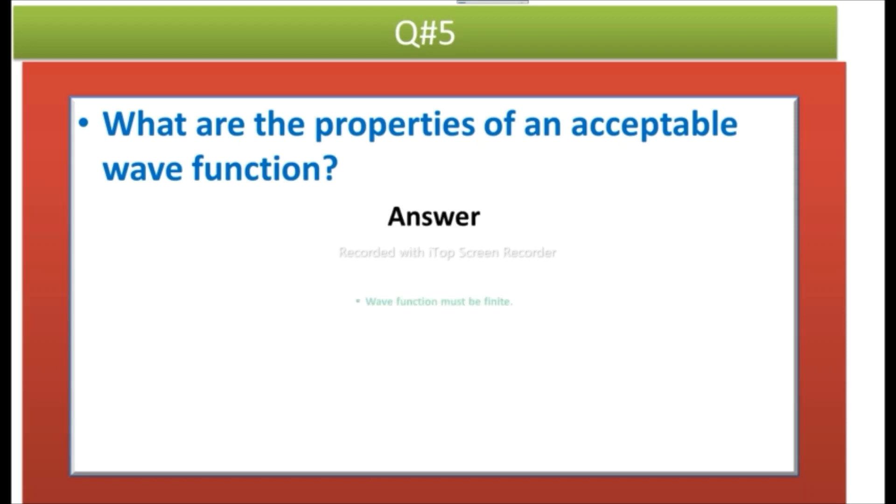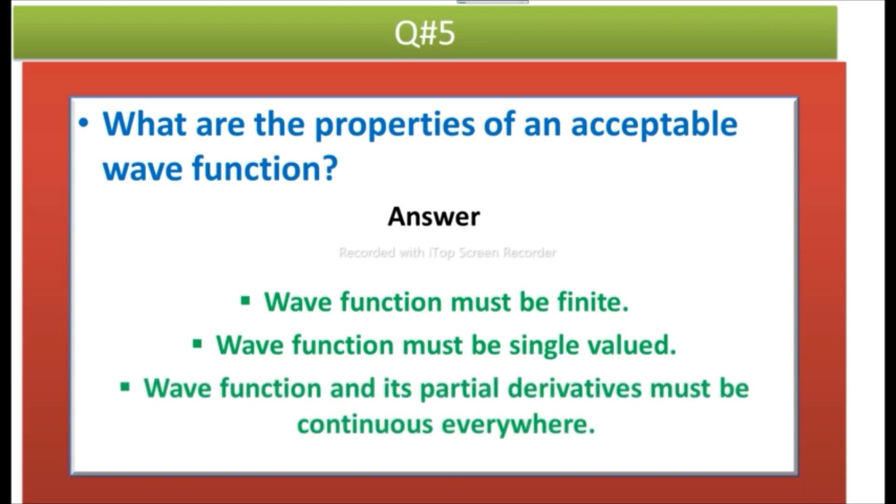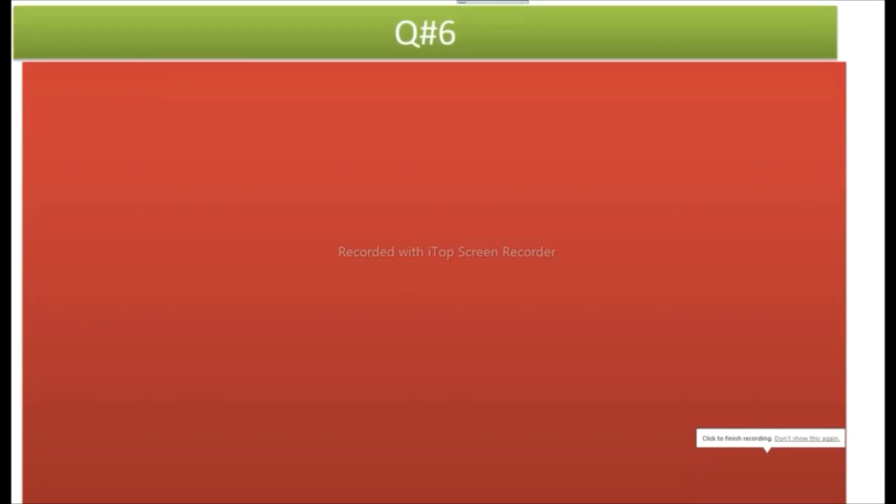Next question: What are the properties of an acceptable wave function? Answer: Wave function must be finite, wave function must be single valued, and wave function and its all partial derivatives must be continuous everywhere. These are the properties that must be fulfilled for a wave function to be acceptable.